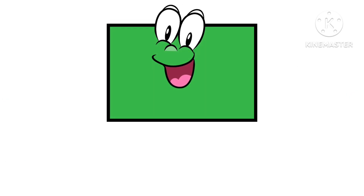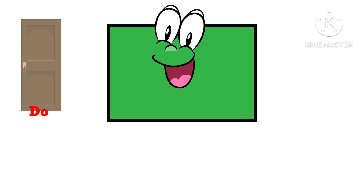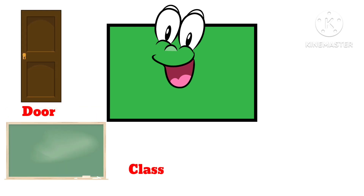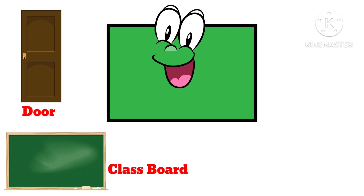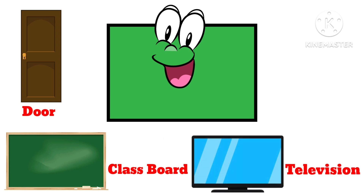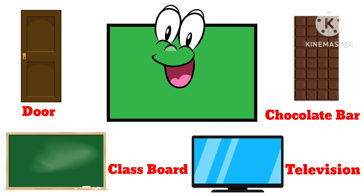What shape is this? This is a rectangle. So kids, let's learn about the objects that are rectangle in shape. Examples: door, glass, television, and chocolate bar are all rectangle in shape.